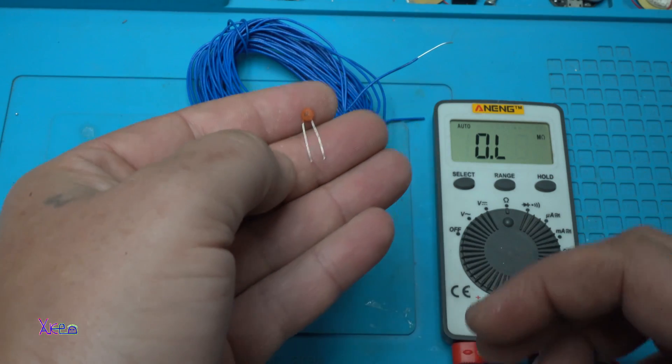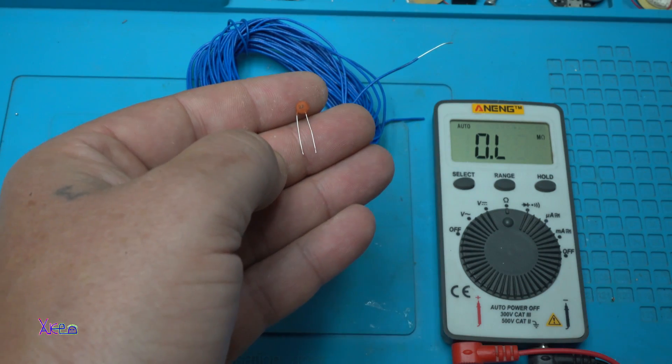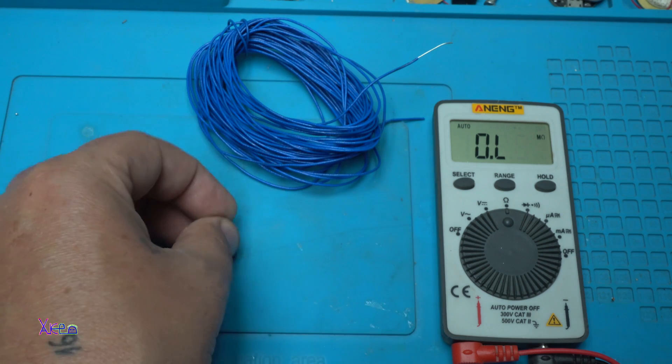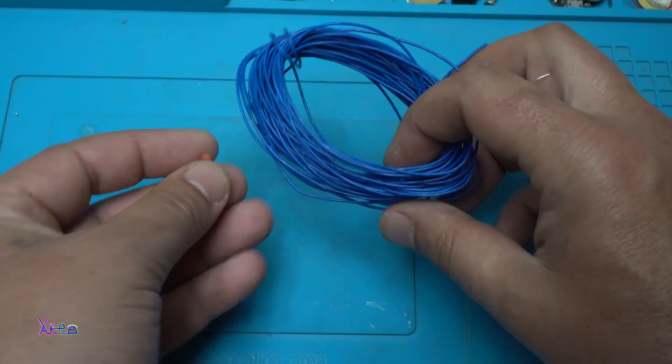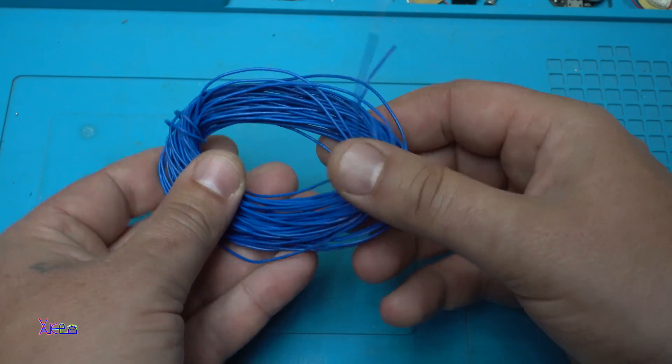Here is the capacitor of 22 picofarads. Alright, these two are for making the coil, and now I am going to show you how to make it.